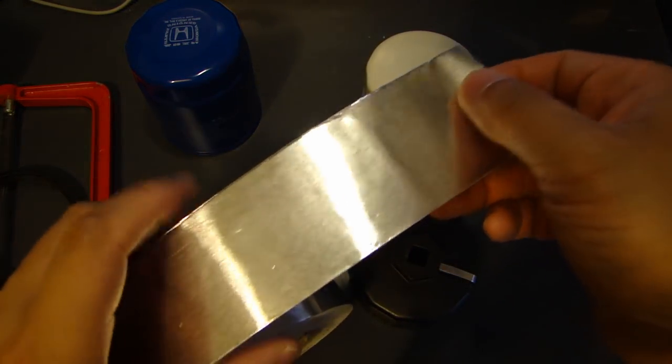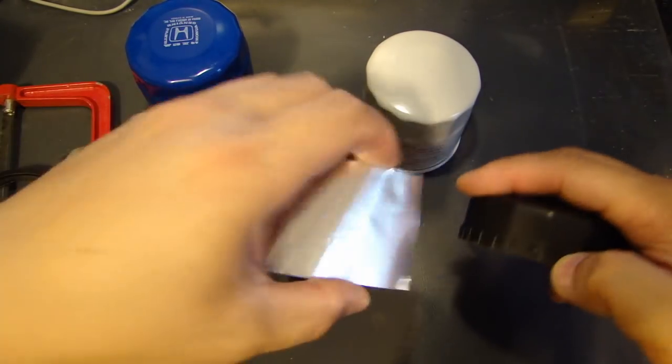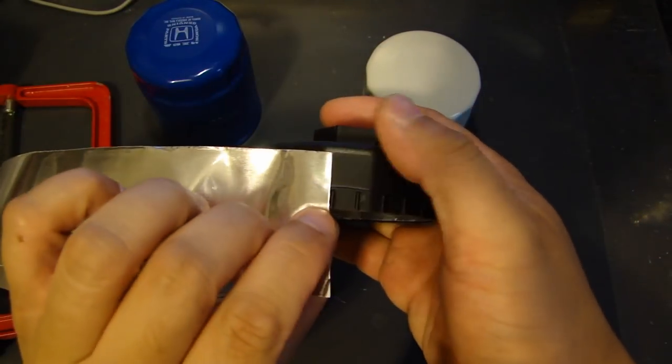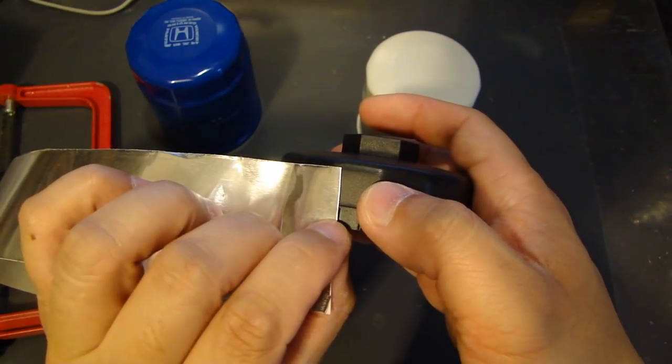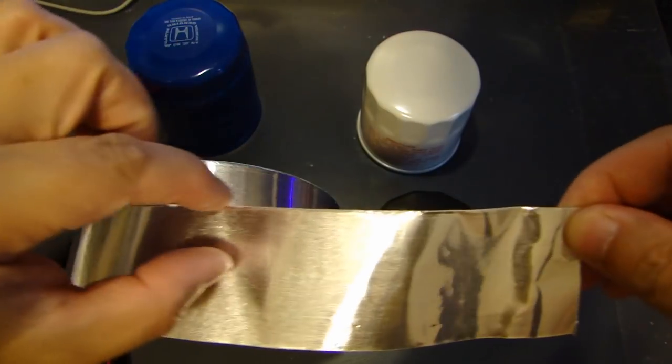And what you want to do is cut the width of your filter. So if your filter is this deep, then just cut about this much on the foil, and cut a length of it.